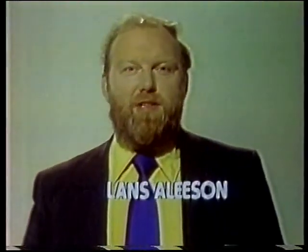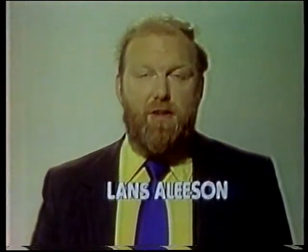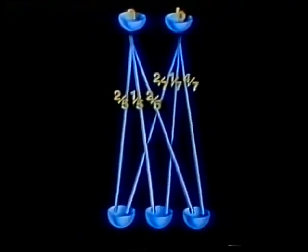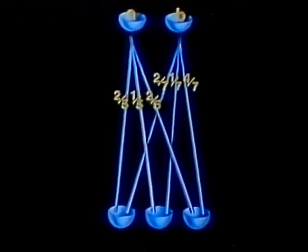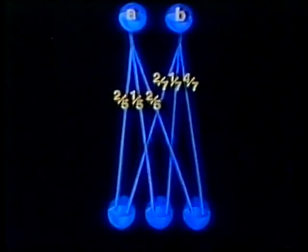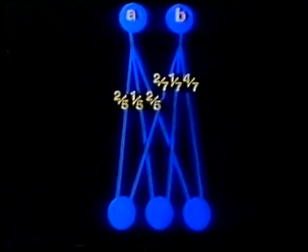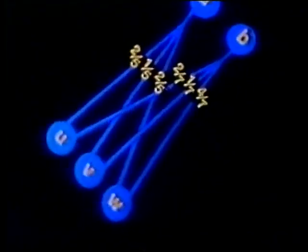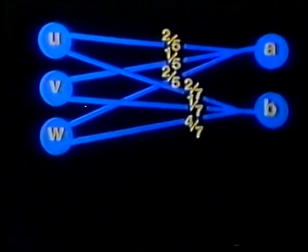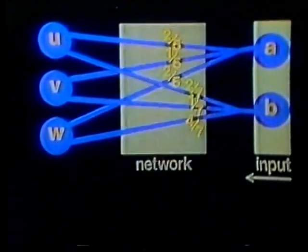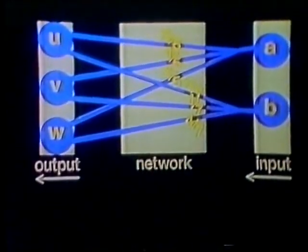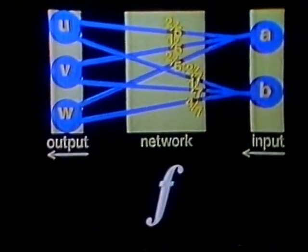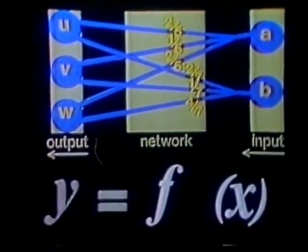The way we represent a network by a matrix is by analogy with the idea of functions. Let me explain using John's first network. Let's first simplify the diagram, just as we did in the text, using lines instead of pipes. And let's call the output quantities U, V, and W. To see the analogy with functions, turn the network on its side. Now our input is on the right, being acted on by the network, to produce the output. The analogy here is with a function F acting on an input X to produce an output Y.